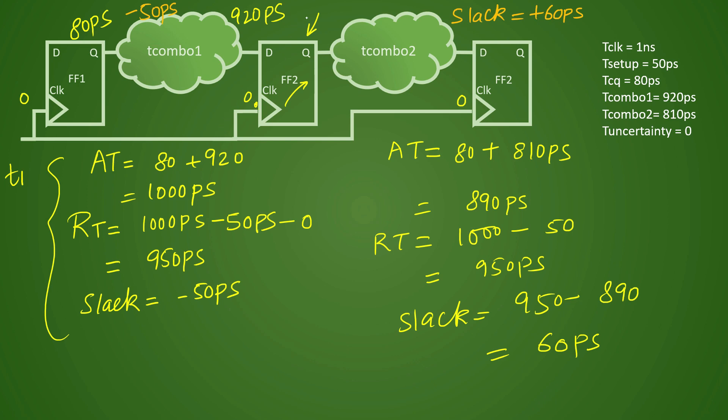In that case, what will happen is this is your capture flop for T combo 1. So in that particular case, this capture clock will add 50 picoseconds or whatever push it can do for pushing this clock so that this particular latency is increased by the amount that is your slack violation.